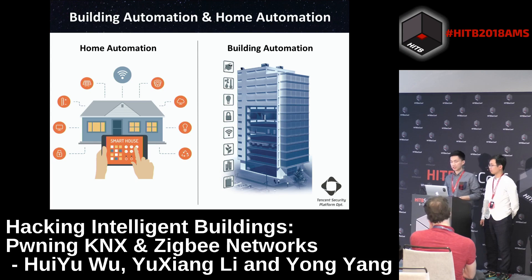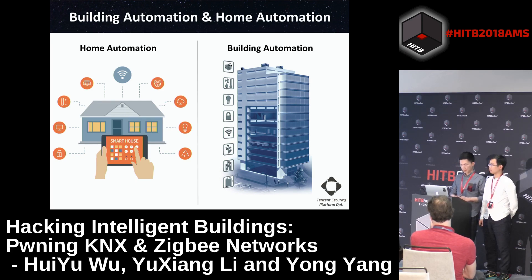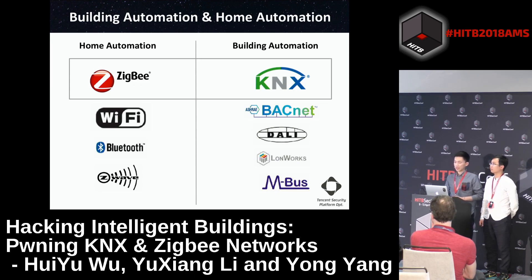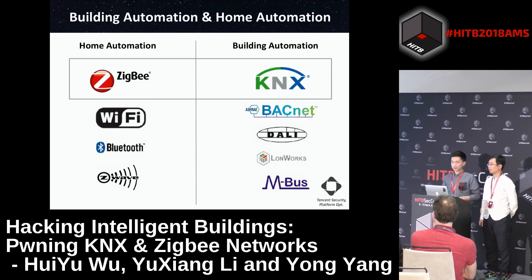By using different locations, we can divide intelligent buildings into two categories: building automation and home automation. There are many kinds of intelligent building devices, and many communication protocols are used. ZigBee and KNX are the most widely used in intelligent buildings. Considering the market share, we chose ZigBee and KNX as targets for security research.